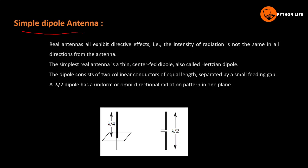For a real antenna, the intensity of radiation is not the same in all directions. The simplest real antenna is the centrally-fed dipole, also called the horizontal dipole. The dipole consists of two collinear conductors of equal length separated by a small feeding gap.